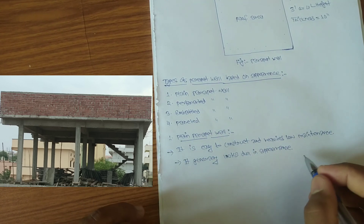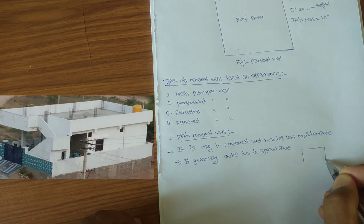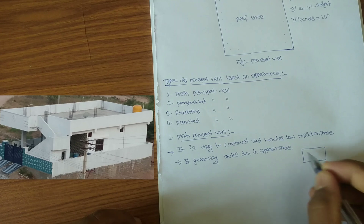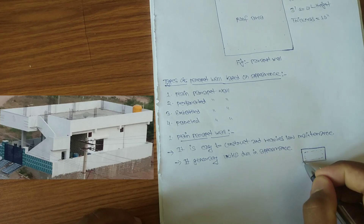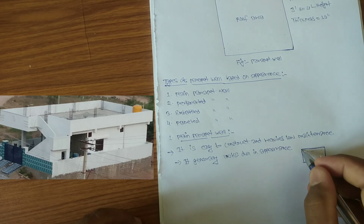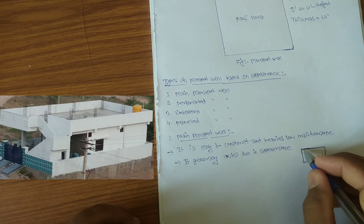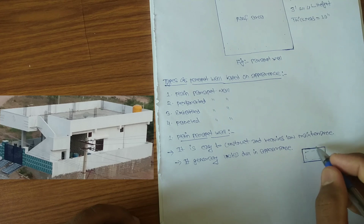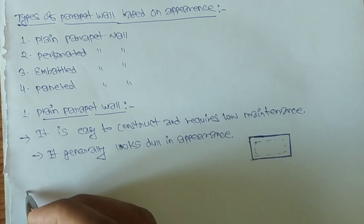Let me show you the figure of a plain parapet wall. Suppose this is your roof area and besides all four sides there is a parapet wall — that is a plain parapet wall. This wall is actually plastered with cement. Moving on to the second type, that is the perforated parapet wall.